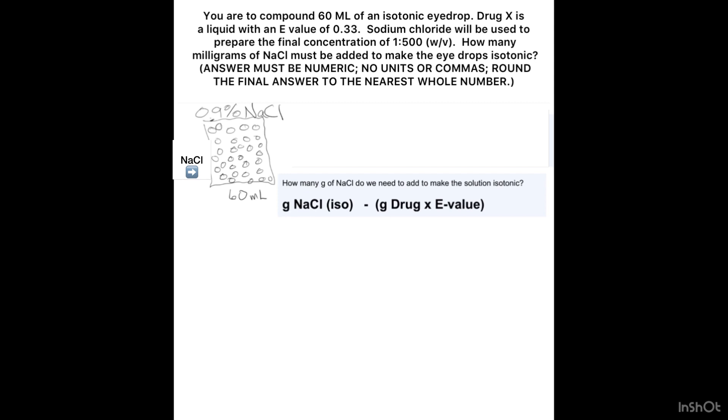So I'm going to start with it completely isotonic and then I'm going to subtract out the drugs after I convert it to something equivalent to the grams of sodium chloride. That's why I'm going to use my E value.